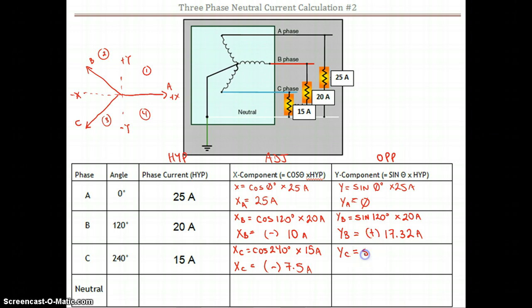We're going to take the sine of 240 degrees, multiply it by our hypotenuse of 15 amps. And this guy has a y component that should be a negative number. Let's just see, 240 sine gives us minus 0.866 times 15 gives us a value of negative 12.99.